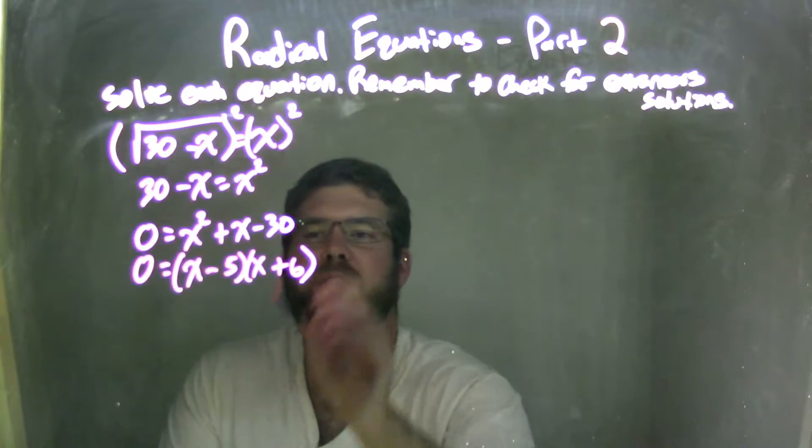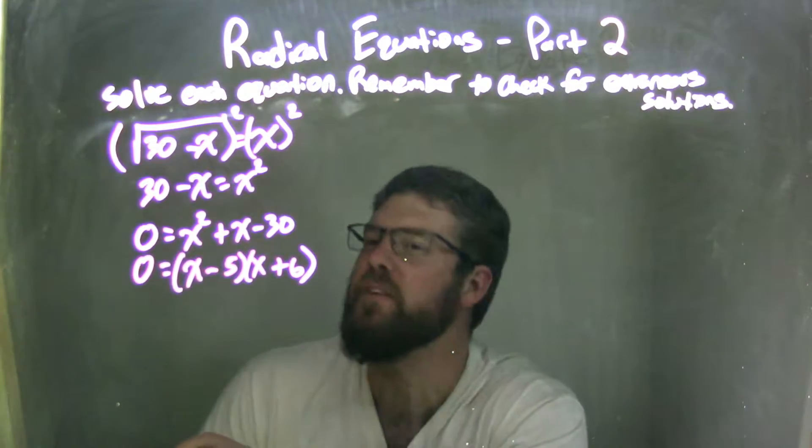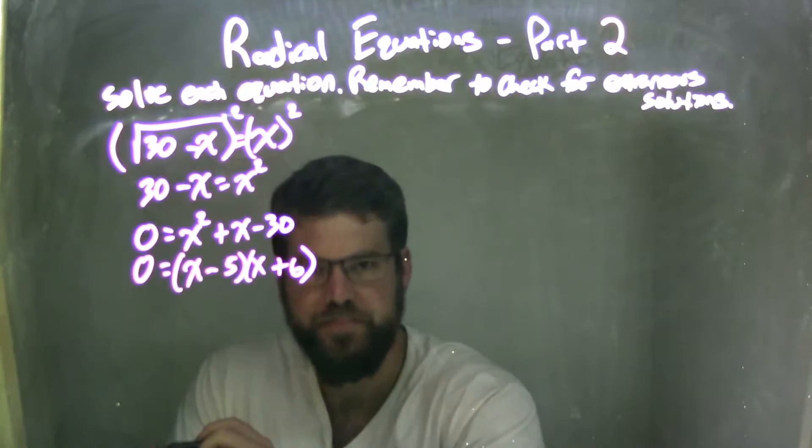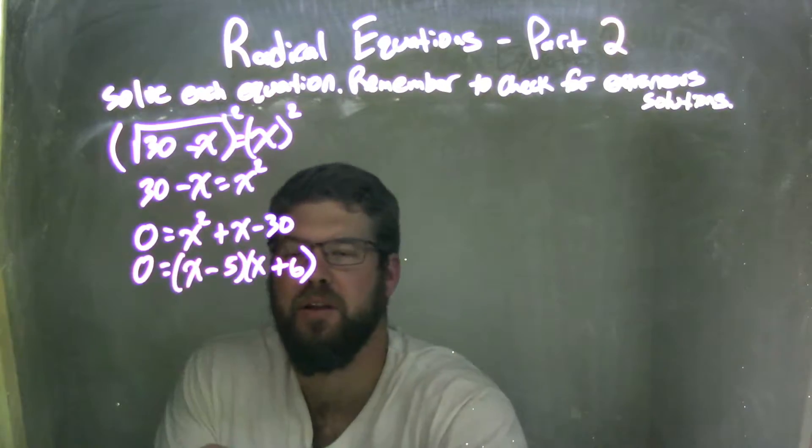And that's going to be a negative 5 and a positive 6. Negative 5 times 6 is 30, and they add together, negative 5 plus 6 is a positive 1, because remember there's that 1 in front of the x there.